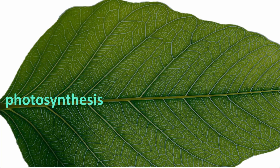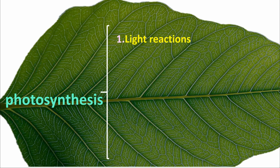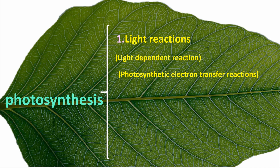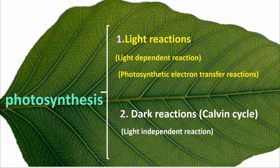Photosynthesis has two parts: light reactions, also called light-dependent reactions or photosynthetic electron transfer reactions; and dark reactions, also called the Calvin Cycle or light-independent reactions.